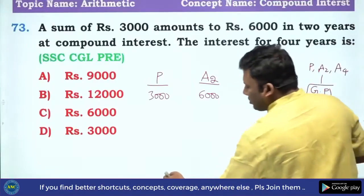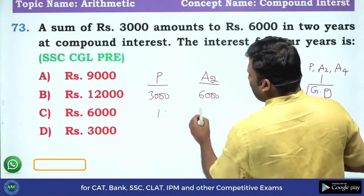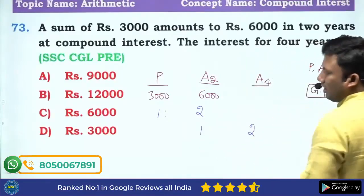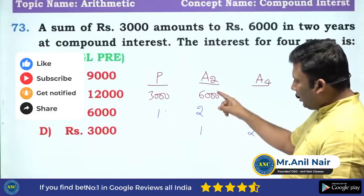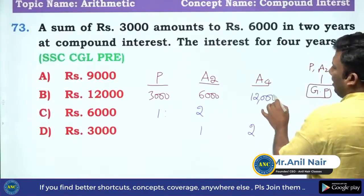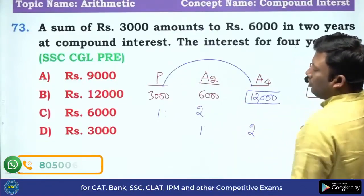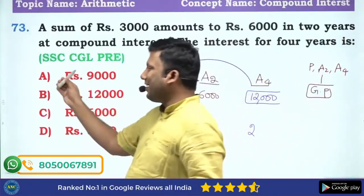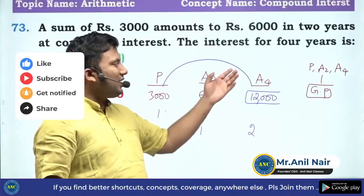Another way to look at it: 3,000 is to 6,000 is in the ratio 1 is to 2. So A2 to A4 should also be in the ratio 1 is to 2. If 1 is becoming 6,000, then 2 will become 12,000. So A4 is 12,000. The total interest is 12,000 minus 3,000, which is 9,000. How easy it is if you understand the concept!